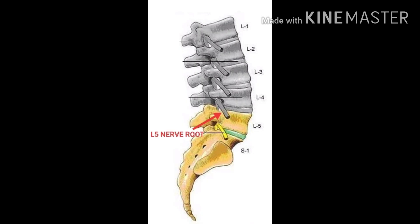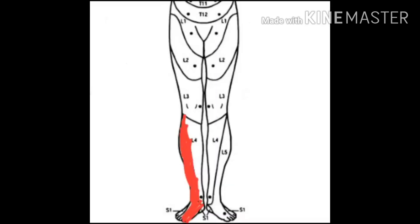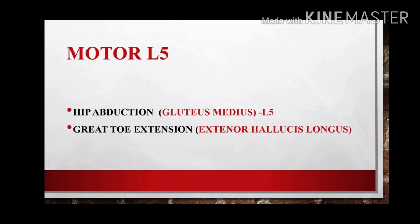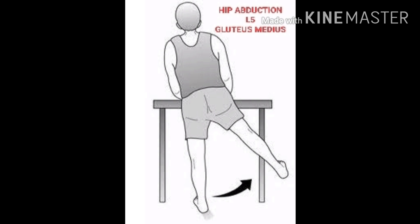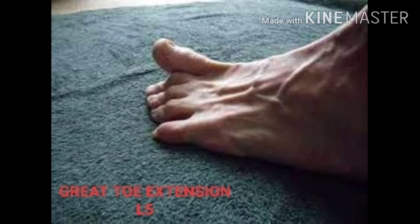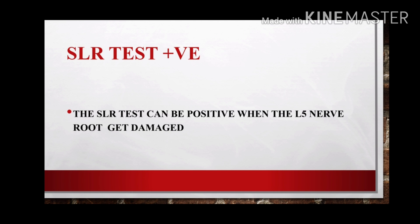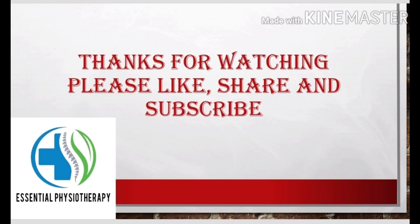If there is any herniated disc between L4 and L5 vertebrae, the L5 nerve root will get affected. The sensory area is the lateral aspect of the leg down to the medial aspect of the foot up to the great toe. The motor functions of L5 are hip abduction done by the gluteus medius, and great toe extension done by the extensor hallucis longus. The straight leg raise test can be positive when the L5 nerve root is damaged.